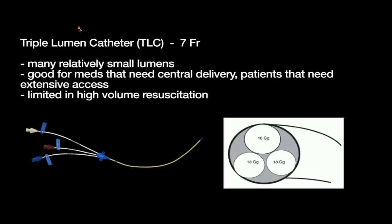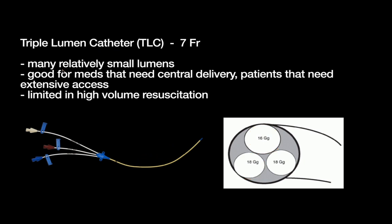Now, each catheter type individually. Your first option is the catheter you use when you really want central access primarily for medication delivery, but you're not massively resuscitating a patient. This is a relatively long catheter that gives central access, but each lumen is relatively small — 16 gauge, 18 gauge, etc. You can't push large volumes quickly because of these small lumens traveling through this long catheter. It has many relatively small lumens, is good for medications needing central delivery, but is limited for high-volume resuscitation. The triple lumen catheter, or TLC, is roughly seven French in size.